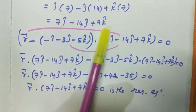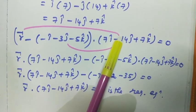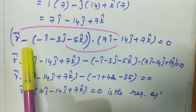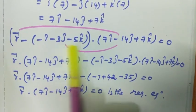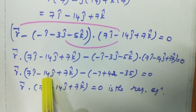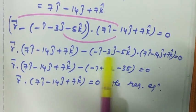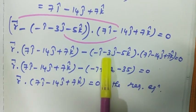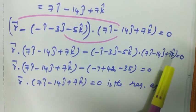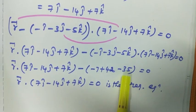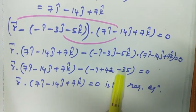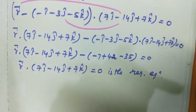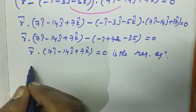R vector dot 7i cap minus 14j cap plus 7k cap minus this product. So now we have to do this dot product: ii, jj, kk dot. So minus 1 into 7, minus 3 into minus 14, minus 5 into 7. This value is 0.